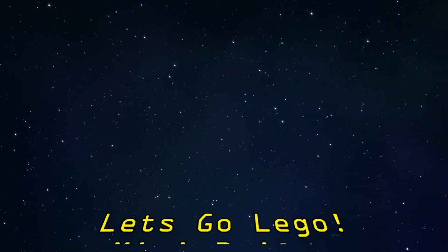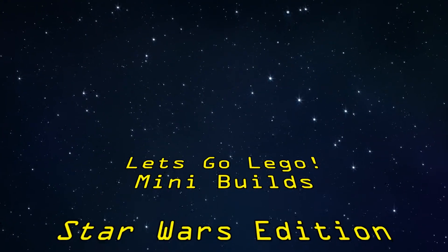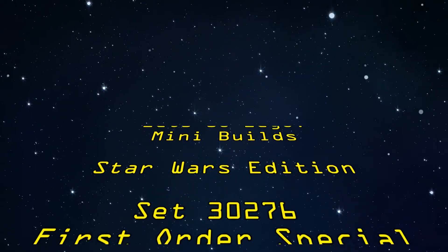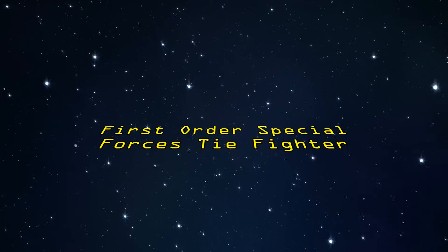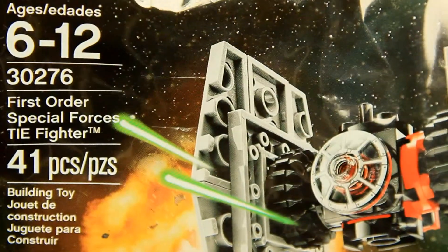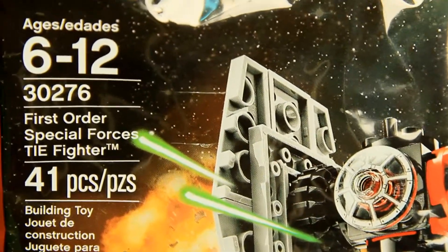Hello everyone, I am Richie Analog and welcome to another Let's Go LEGO. On today's show, I'm going to be unboxing, or rather unbagging, the LEGO Star Wars Mini Build 30276, The First Order Special TIE Fighter.